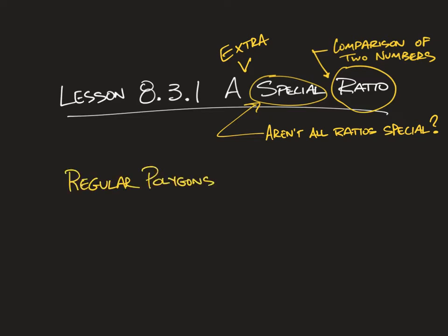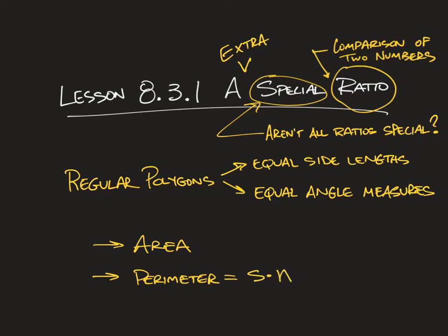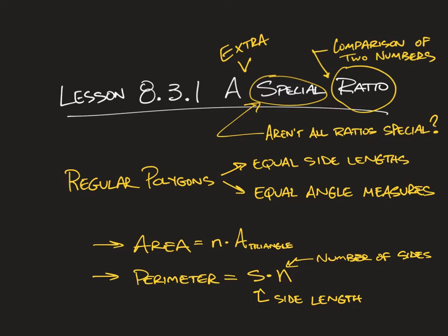In this lesson we're going to look at regular polygons again. Remember that a regular polygon has equal side lengths and equal angle measures. Specifically, we're going to look at area and perimeter. Perimeter for a regular polygon is easy — it's just the side length times the number of sides. Area is more complicated; we calculate the area of a central triangle and multiply by n.